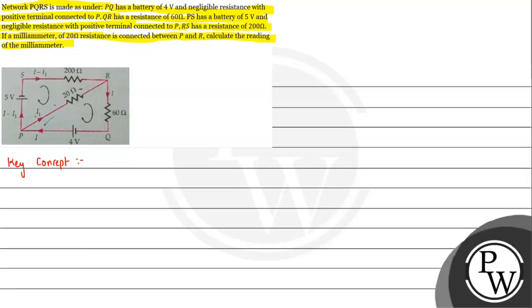The key concept we need to understand is Kirchhoff's Voltage Law, abbreviated as KVL, also known as Kirchhoff's loop law. Applying KVL, we can solve this question. We have two conventions. First: if we are tracing the circuit in a direction and we come across a battery source with positive terminal first and then negative terminal, with EMF value e, there will be a drop of potential and we write it as minus e. So while moving from positive to negative side, we take minus e.